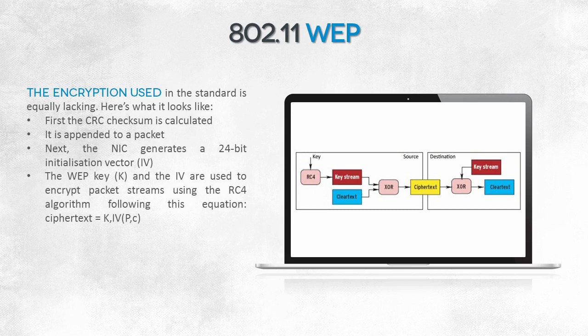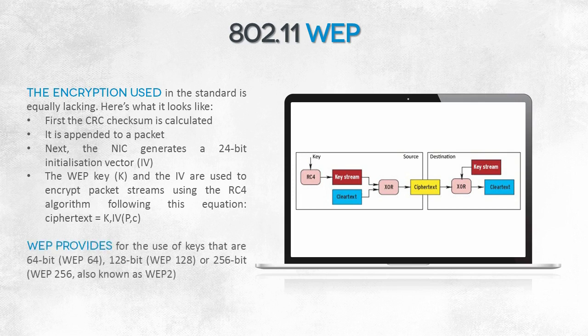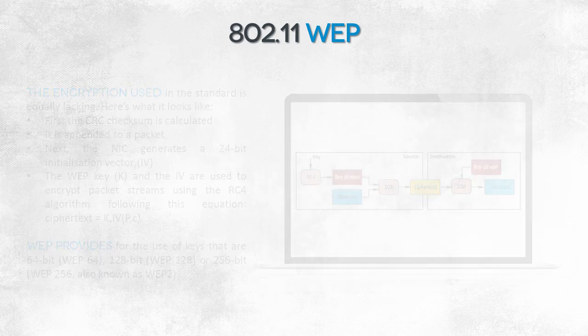When an IV is used, the data stream has to be mapped with a key stream. The exclusive-or (XOR) is used for this purpose. The end result is a ciphertext — the encrypted version of a packet that we send to an access point. Key length depends on the WEP version; it can be 64-bit or even 256-bit long. Even if the key is really long, it cannot ensure the security of a network on its own.